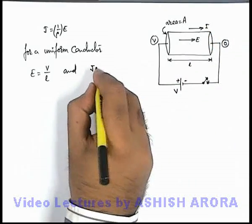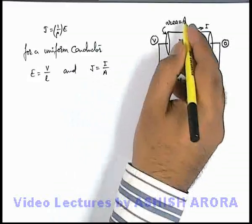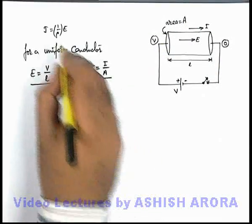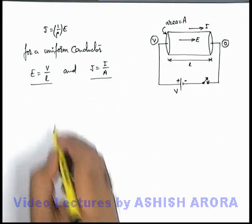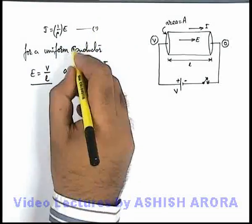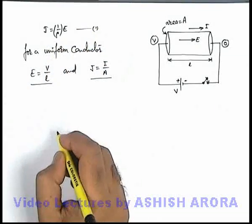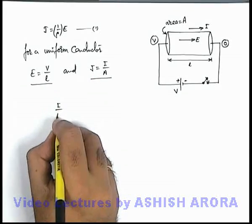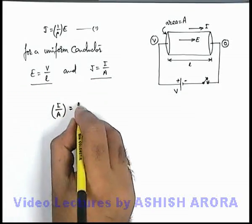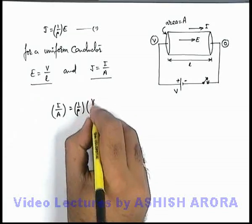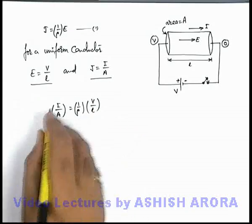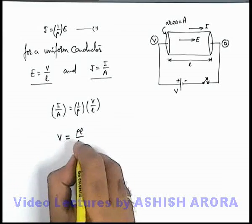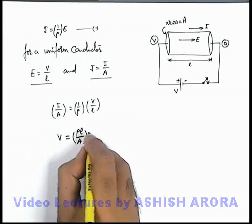If a current I flows through the conductor due to the application of potential difference, the current density can be written as J = I/A, where A is the area of cross section. Substituting the electric field E = V/L and current density J = I/A into Equation 1, we get I/A = (1/ρ)(V/L), which on further simplifying gives V = (ρL/A) × I.